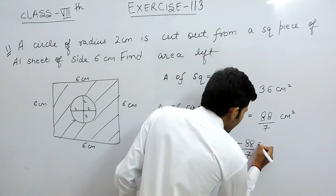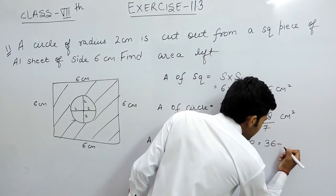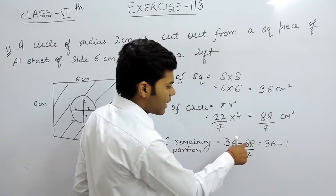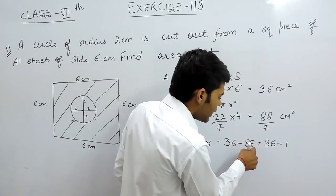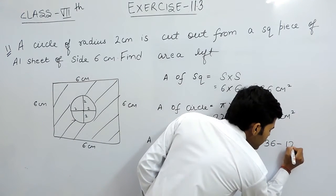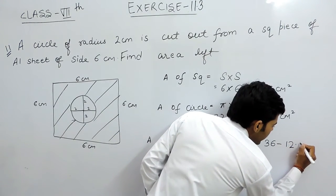Convert this to decimal, that will be 36 minus - 7 into 88: 1 times 7, the remainder is 1; 18: 7 times 2 is 14, the remainder is 4, point.